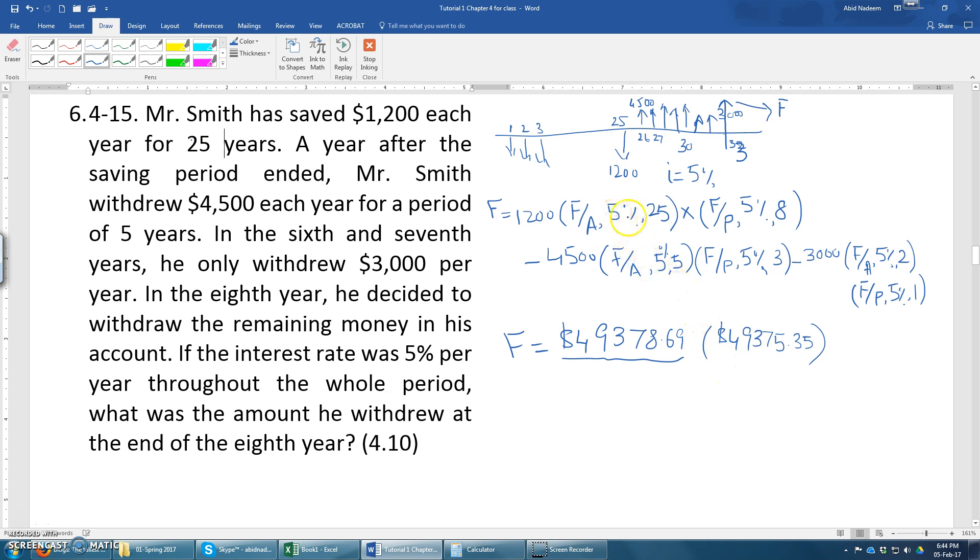So remember that this is a little bit complex situation. Here you can see that this factor compounds the values to year 25, the last year. And then that is a single value here, this compounded value now is a single value. So therefore we have to multiply it with the compound amount factor for a single payment, F over P, so that we can reach for further eight years at year 33.